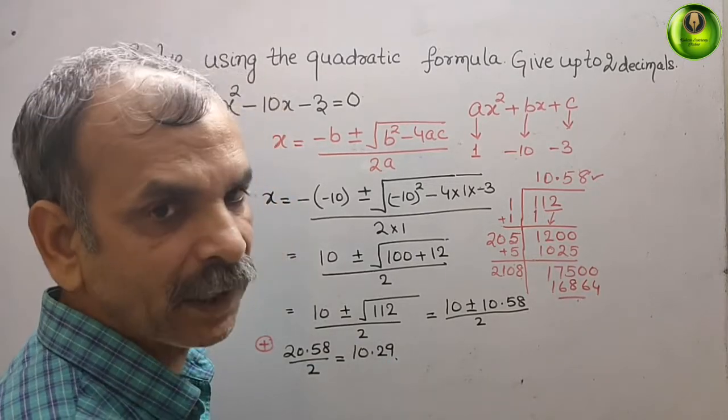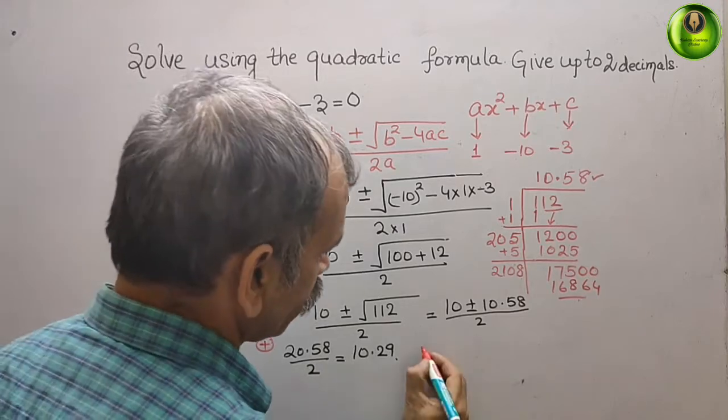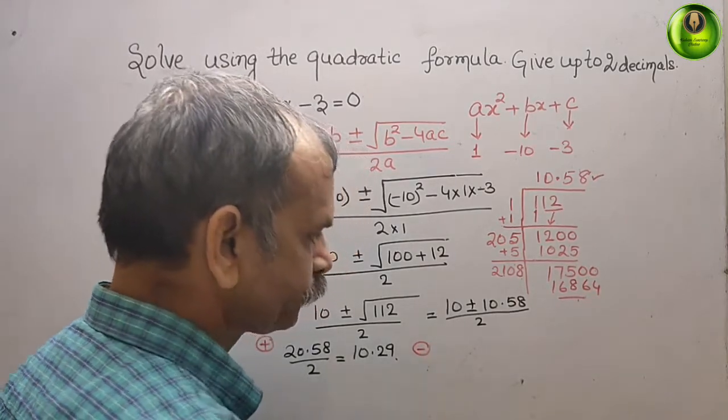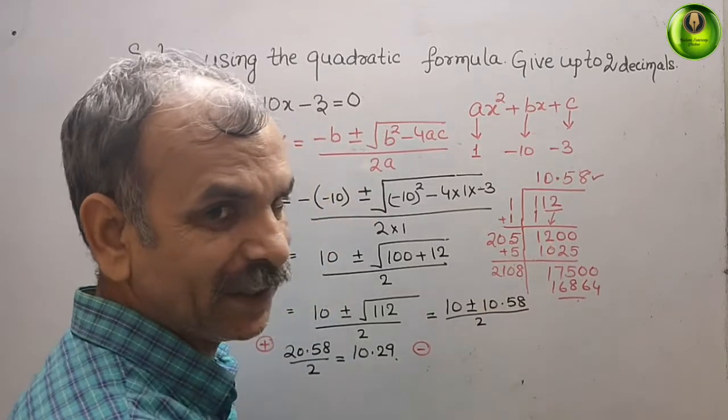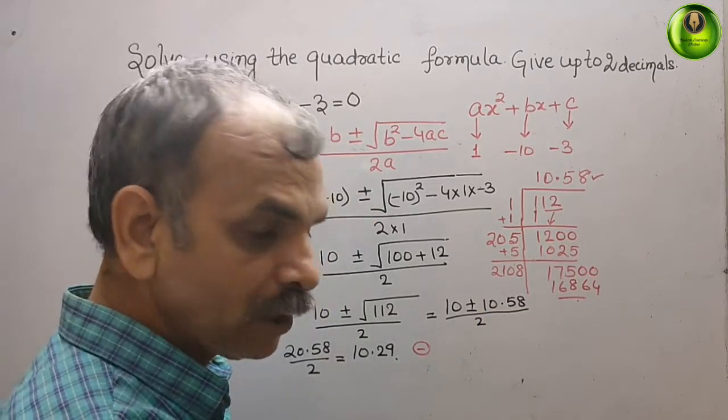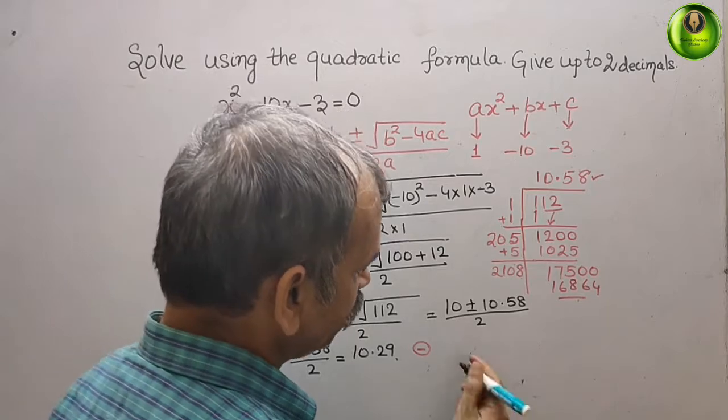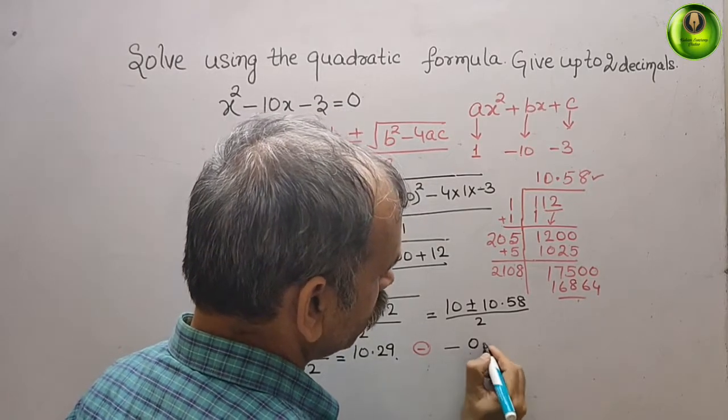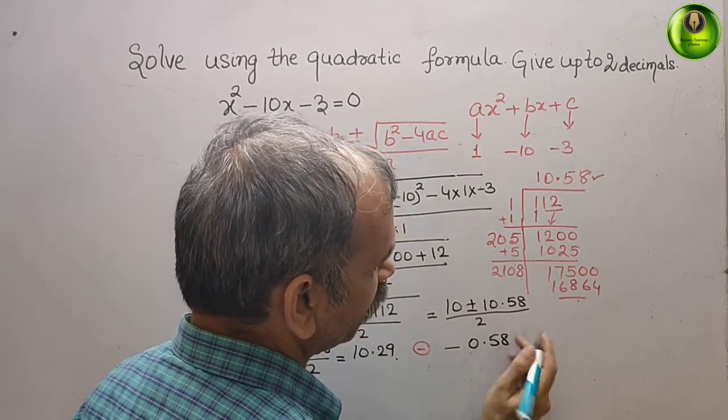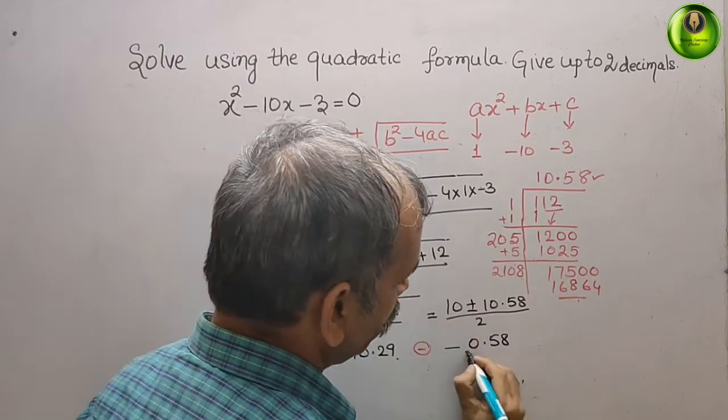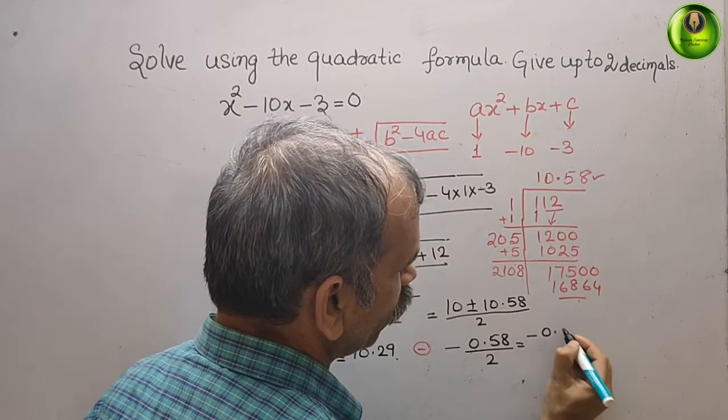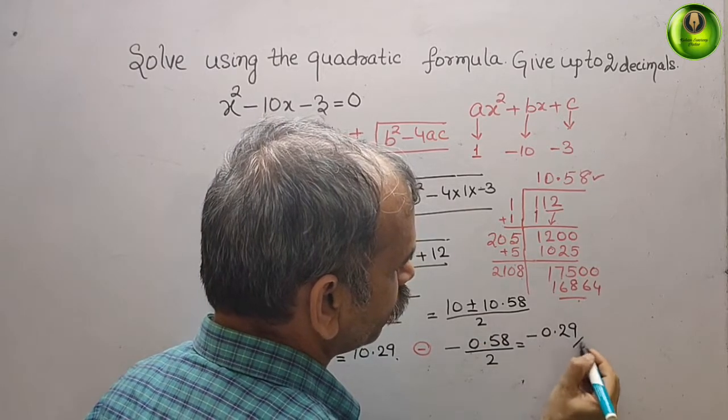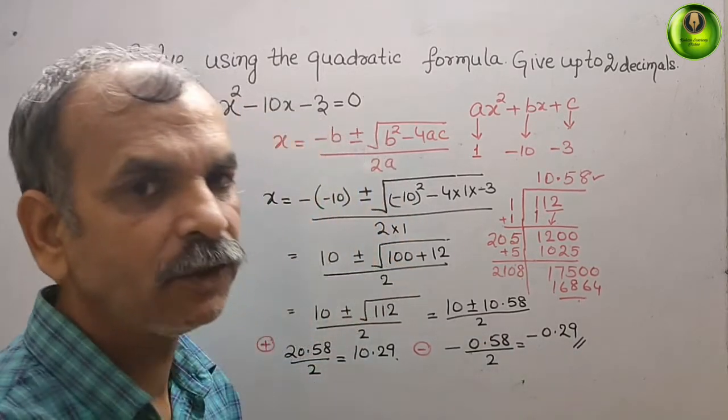Now we will take minus. You can see 10.58 is greater. We get -0.58 when we subtract it. By 2, that equals -0.29. This is the second value.